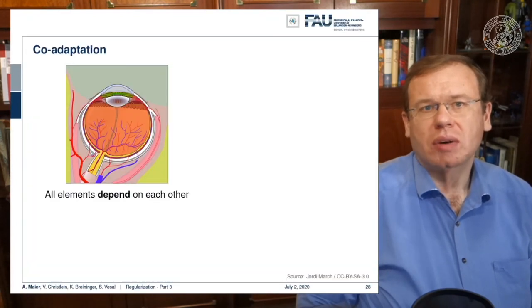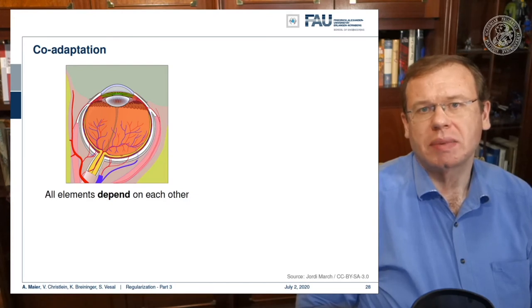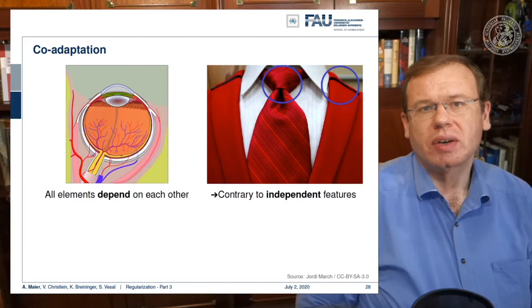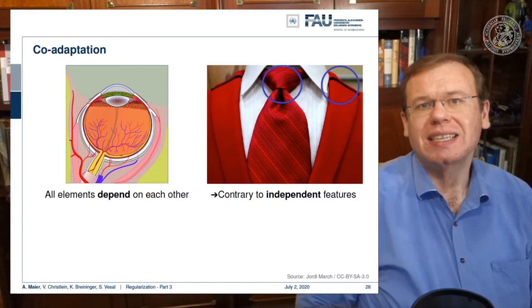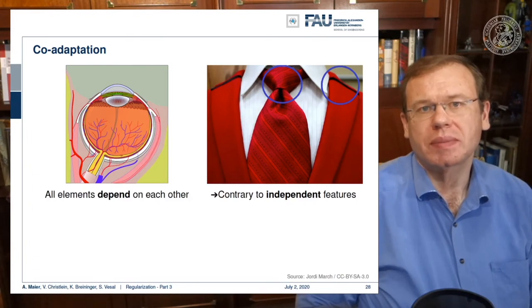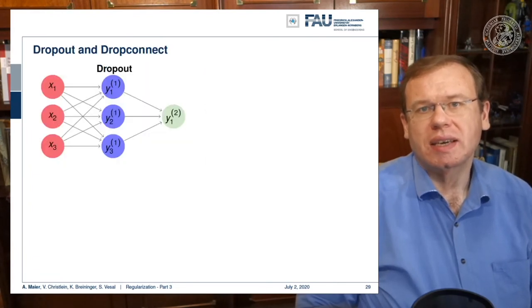Now we already talked about dropout. So this is a very important technology that is being used in deep networks. One thing that you may want to consider is that all of the elements during training depend on each other. So if you have correlated inputs, then also the adaptation will run in a similar way. But if you have independent features that allow you to recognize different things, then you somehow have to break the correlation between the features and this can actually be performed by dropout.